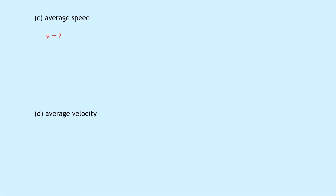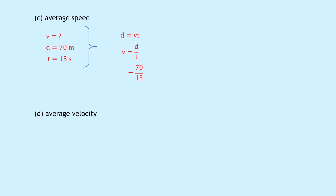Part C says to find the average speed, so we need to use speed-distance-time here. Writing down what we know: we're trying to find average speed, v-bar equals question mark. We know the distance is 70 metres from part A, and our time in the question is 15 seconds. So we've got d equals v-bar times t, rearranging for the average speed we get d over t, and substituting in the numbers gives us 70 divided by 15, which gives an answer of 4.7 metres per second.